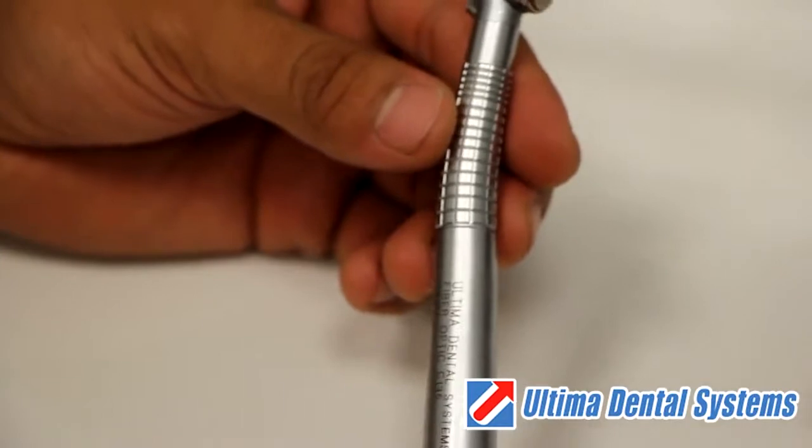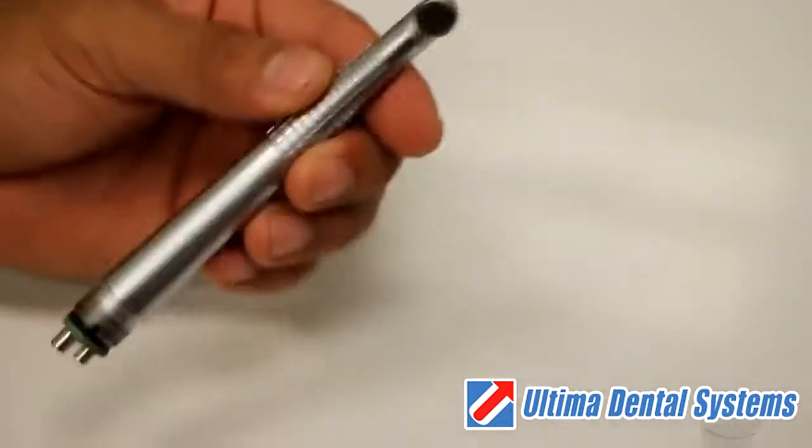First, you should have a burr or a blank seated in the handpiece before starting.